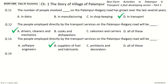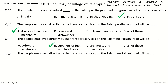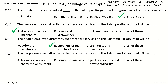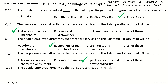Question 14: The people employed directly by the transport services on the Palampur-Raiganj road will be dash. The options are: Bookkeepers and chartered accountants, Computer analysts, Packers, loaders and traffic authority, All of these. And the answer is Packers, loaders and traffic authority.